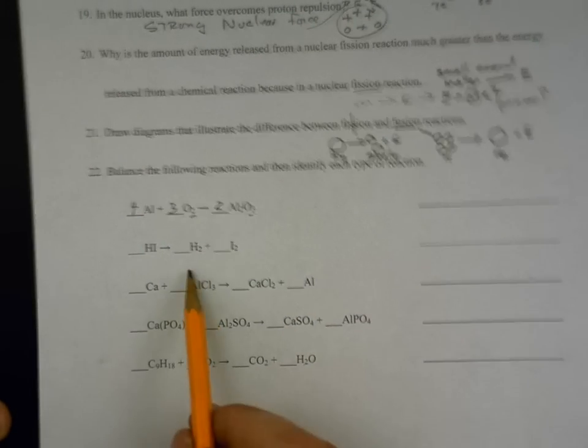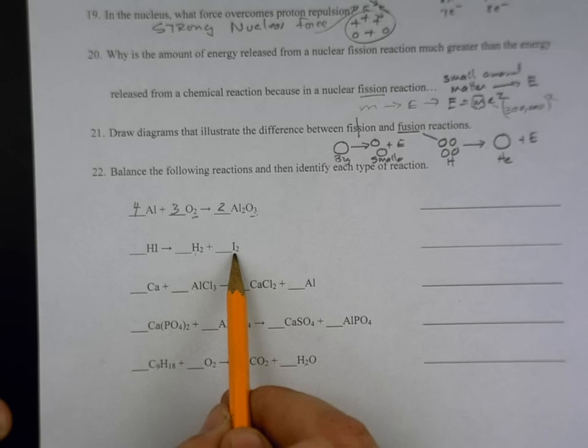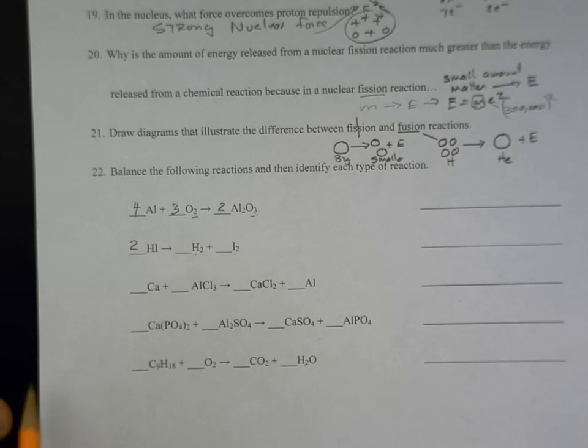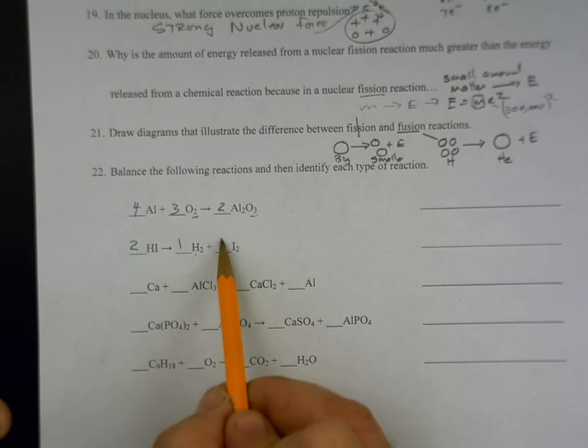On this one right here, we have two hydrogens formed and two iodines. That's pretty straightforward. We just need a coefficient there. We don't really need to put in the ones, but there they are.